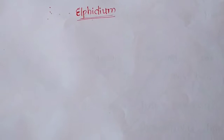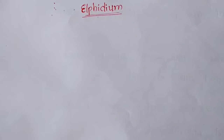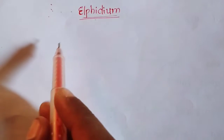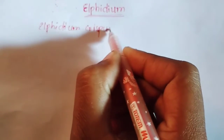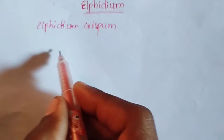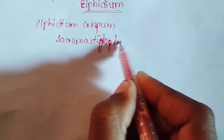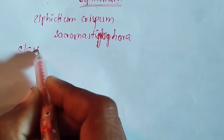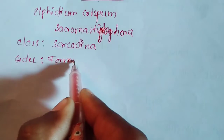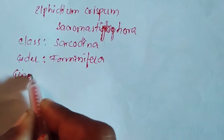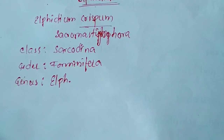In this video we will discuss Elphidium: its structure, life cycle, and reproduction, for BSc Geology Semester One. Elphidium, usually called Elphidium crispum, belongs to the phylum Protozoa, subphylum Sarcomastigophora, class Sarcodina, order Foraminifera, genus Elphidium, and species crispum. It is usually called the shell animalcule.